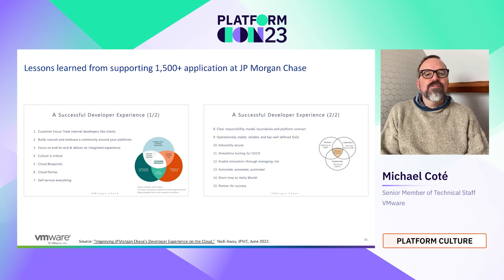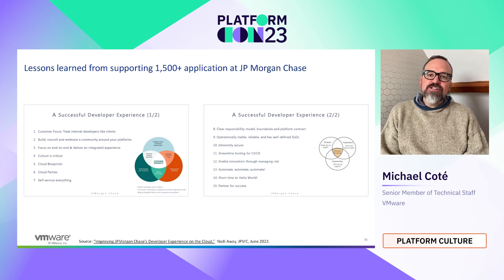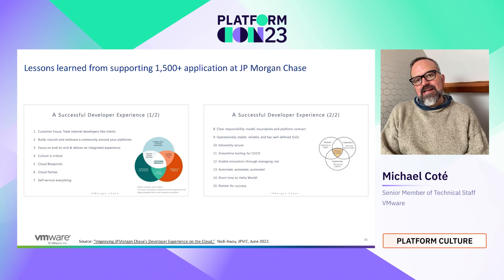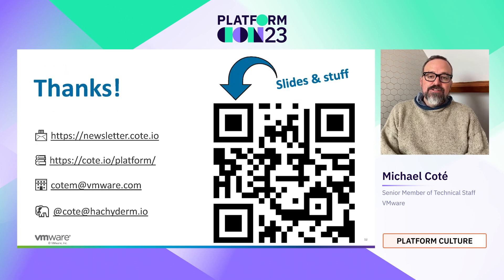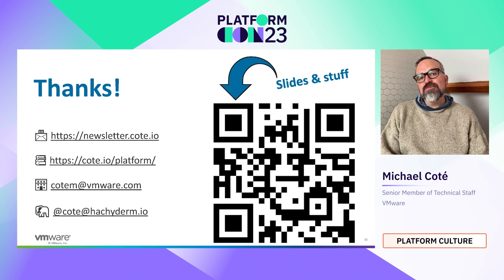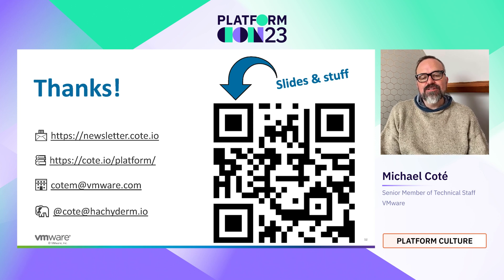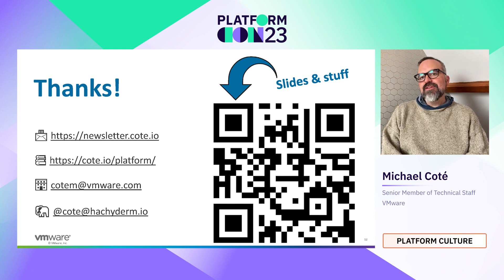If you're interested in how a large organization has been successfully doing this — especially the advocacy part — check out the talk from Nadia at JPMorgan Chase. It's a great overview of how they're doing things with lots of useful tips. Thanks for attending; I hope it was helpful. There's a longer version of this and more on how large organizations are getting better at software — follow the links and enjoy the rest of the conference.